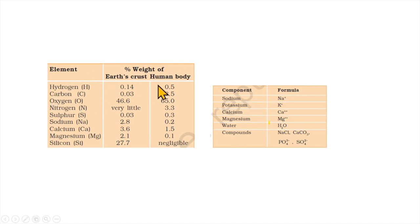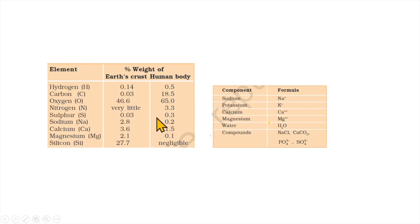Analysis of the human body gives the following elemental composition by percentage weight: hydrogen, carbon 18.5%, oxygen 65%, nitrogen 3.3%, sulfur 0.3%, sodium 0.2%, calcium 1.5%, magnesium 0.5%, and silicon in negligible quantity.